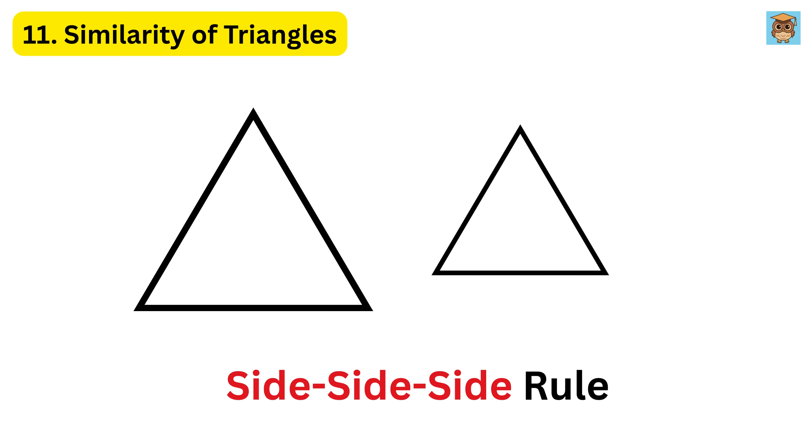Second, the side-side-side rule. If all three sides of one triangle are in the same ratio as the sides of another, they are similar. Third, the side-angle-side rule. If two sides of one triangle are in the same ratio as two sides of another, and the angle between them is the same, then the triangles are similar.